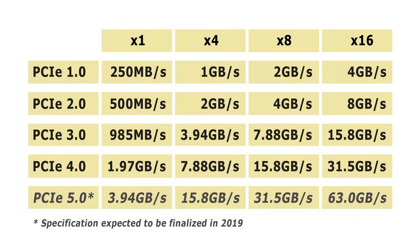In this table you can see all of the theoretical speeds attainable with all current PCIe versions using 1, 4, 8, or 16 lanes. Note that PCIe x32 slots and expansion cards with 32 lanes do exist but are very rare. A new PCIe 5.0 standard was expected to be finalized in 2019 with likely speeds shown in italics in the last line of the table — and a PCIe 5.0 x16 card will be very fast indeed.